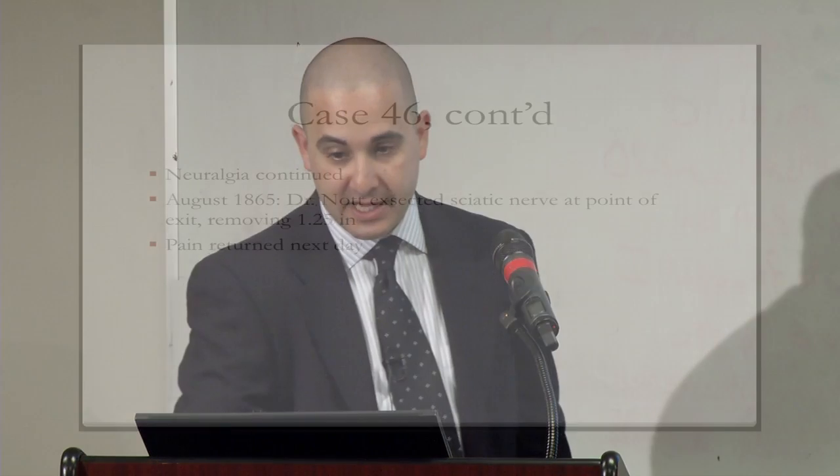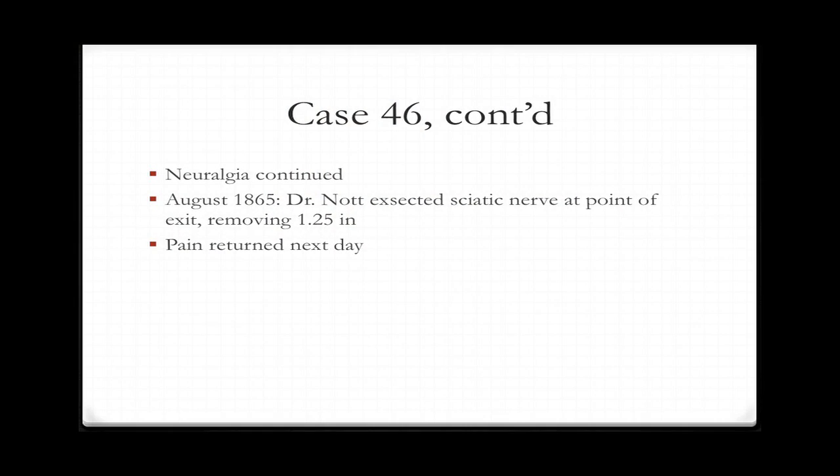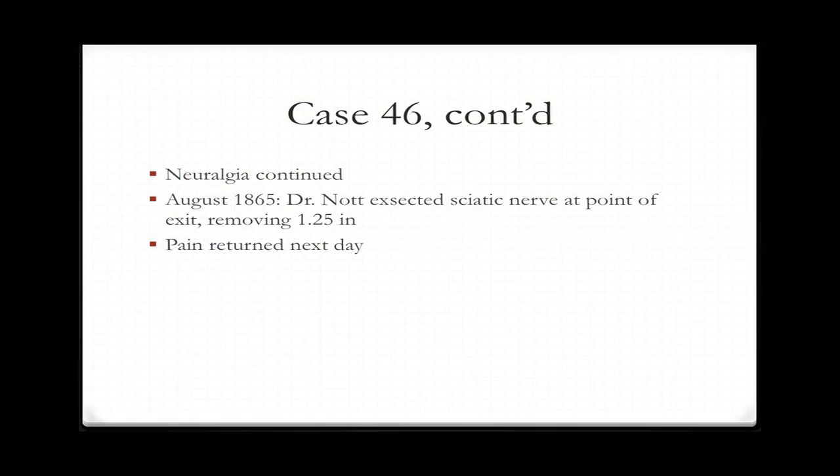Naturally, no relief ensued. In despair, the thigh was removed four inches above the knee, where the sciatic nerve was engorged and double its normal size. The amputations kept going higher and higher up the leg. But the neuralgia continued. In August 1865, Dr. Knott resected the sciatic nerve at the point of exit, removing 1.25 inches. The pain returned the next day.